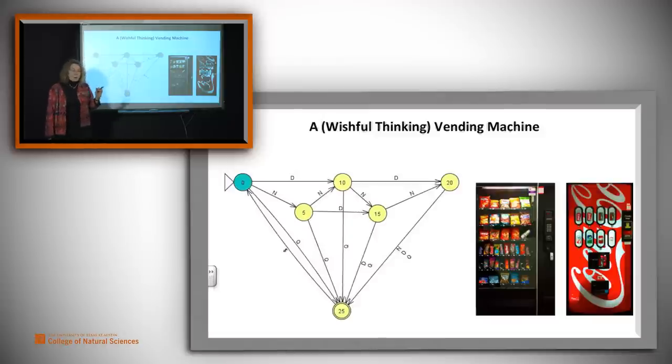Now there are real physical finite state machines all over the place. I like to think of this as a wishful thinking vending machine because, as you'll see, it reaches its accepting state here, two circles, on 25 cents. You can't buy much of anything for 25 cents. But let's look at what's going on. The start state here is zero. You've put no money in. If you put in a nickel, you go to five. If you put in a dime, you go to the one labeled 10. The labels don't matter except they help us understand what's going on.